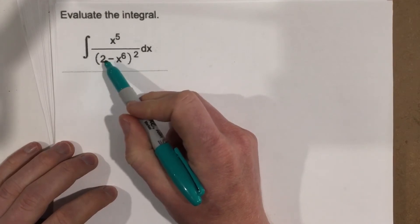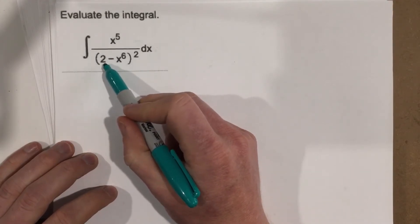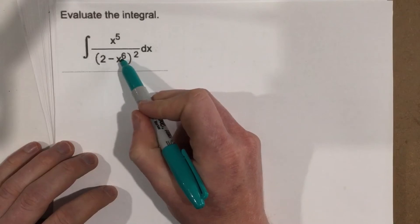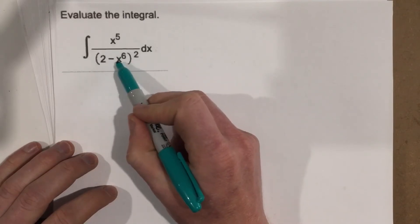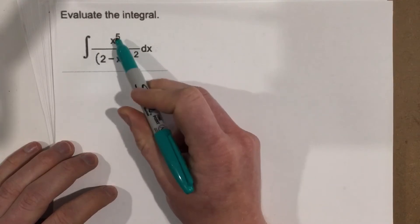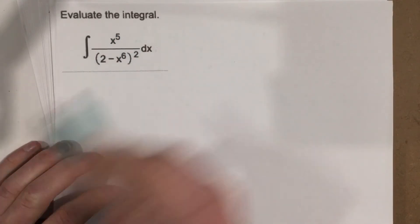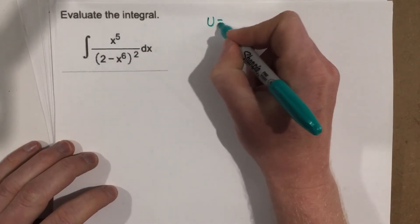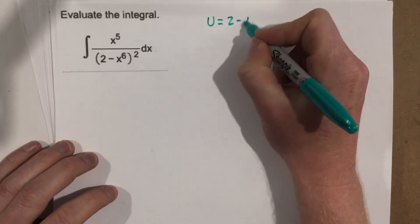We can see that if we make u equal to 2 minus x to the 6th, and we do the derivative of this, the 6 would come to the front, that'd be x to the 5th, we're going to end up being able to cancel this x to the 5th. So let's go ahead and say u equals 2 minus x to the 6th.